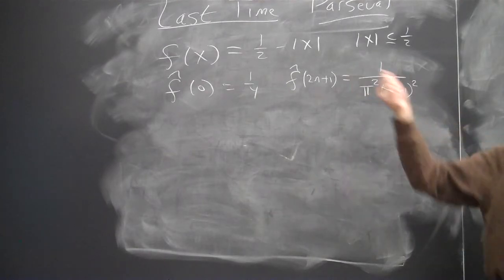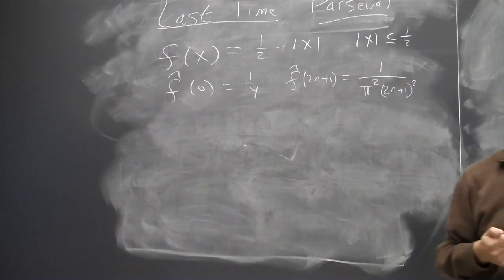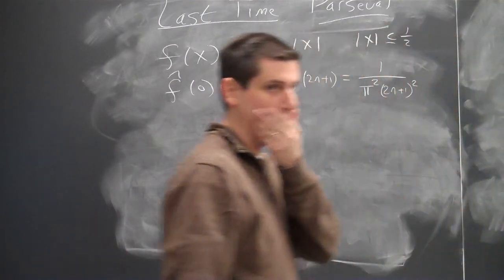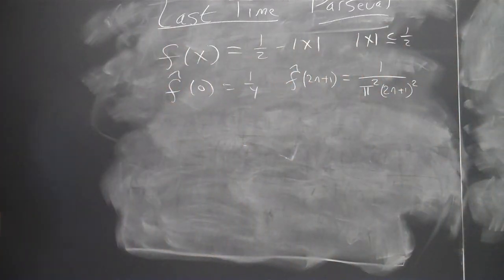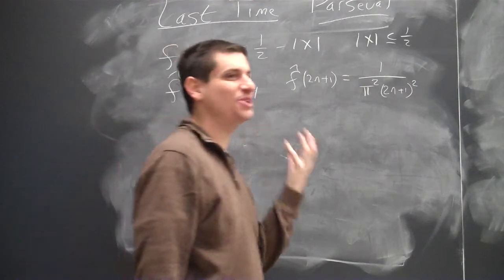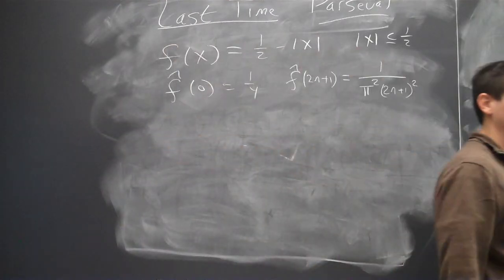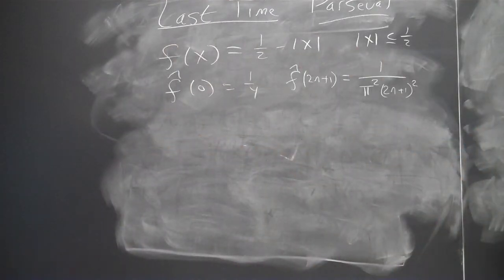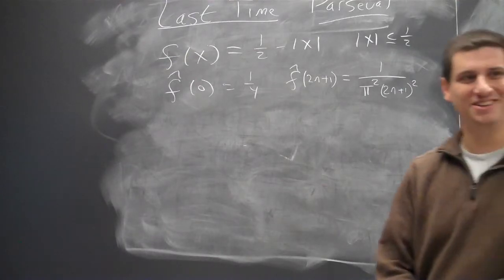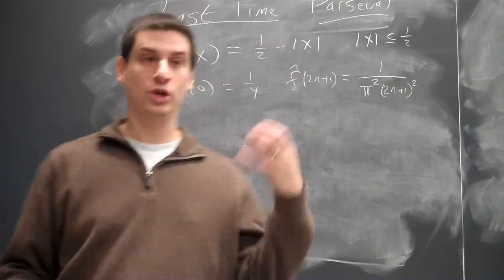Dirichlet tells us that the Fourier series converges at any point where the function is differentiable. At this function, where is the function 1 half minus absolute value of x differentiable? Everywhere except for zero. All right, I want to use it at zero. So I want to use it in a place where Dirichlet's theorem is not available. But how badly does this fail in being differentiable? By a constant. Not very. What do you mean by a constant? It's differentiable off by a constant.